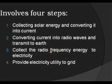The production of electricity using a solar power satellite is a process that involves four steps. The first is collecting solar energy and converting it into electricity. The second is converting this electricity into radio waves. The third is converting radio waves back into electricity. The final step is utility.